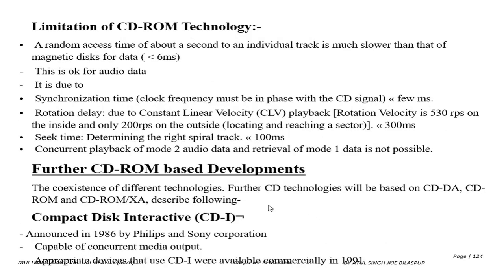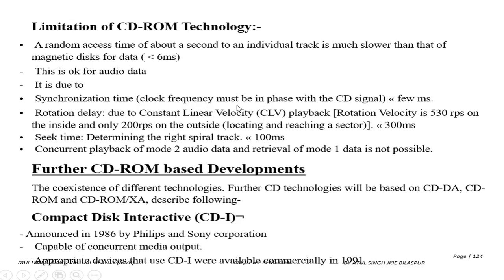Now, limitations of CD-ROM technology: a random access time of about one second to an individual track is much slower than that of a magnetic disk. The accessing time is a little slow. This is acceptable for audio data, but the slow rate is less than 6 microseconds. This is due to synchronization time — the clock frequency must be set in pace with the CD signal.